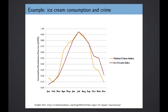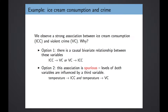A classic example of this is looking at the relationship between ice cream consumption and violent crime. In this graph, you can see that the ice cream sales rate and the violent crime rate over the course of the year are very closely related to one another — these lines match up very closely. So why do we see this relationship? One option is that there is a causal bivariate relationship: that ice cream consumption causes violent crime, or that violent crime causes ice cream consumption. Either story about the causal connection could be the source of seeing an association.